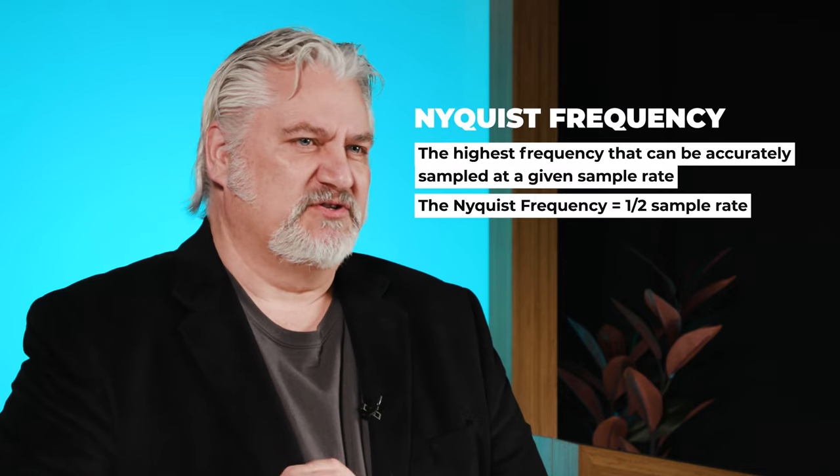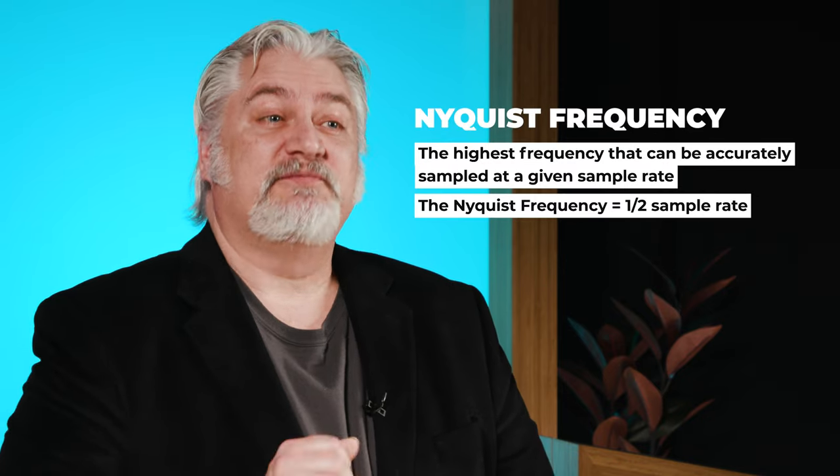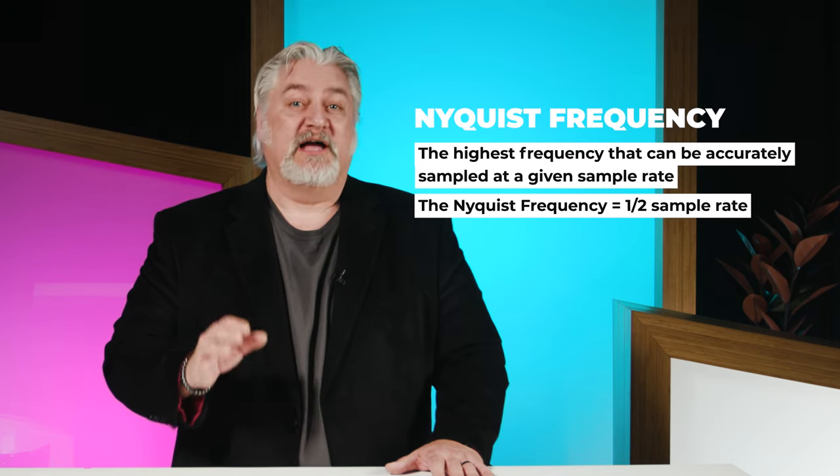Given the Nyquist-Shannon theorem can be proven, we can consider it fact. This all means that the sample rate needs to be at least twice as fast as the highest frequency we want to capture and reproduce. This is called the Nyquist frequency, and it translates to half the sample rate. Frequencies below the Nyquist frequency will be accurately represented. Frequencies above the Nyquist frequency — which is half the sample rate — will not be accurately represented, and will show up as what is called aliasing.